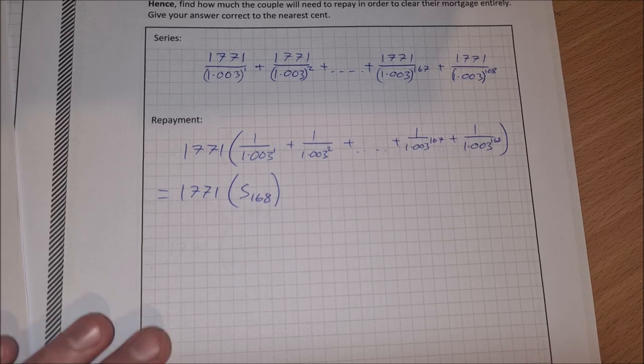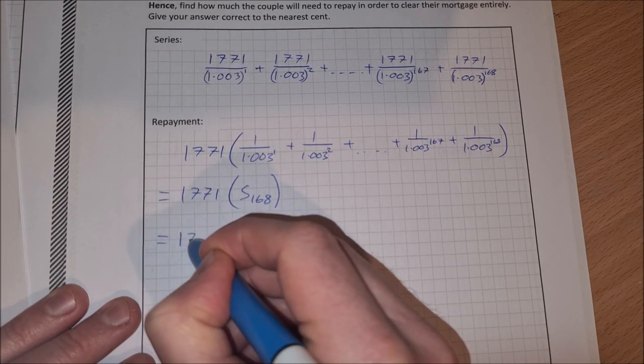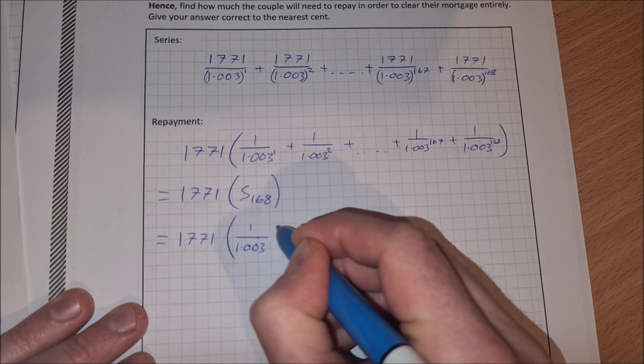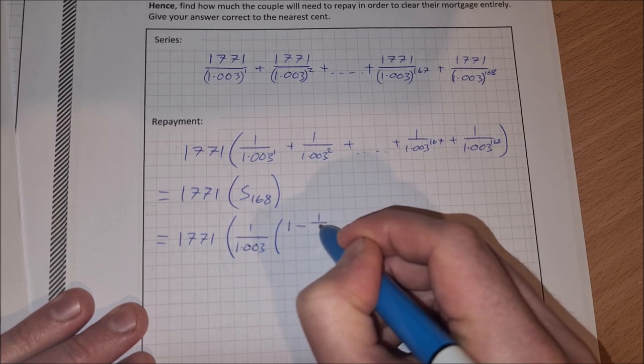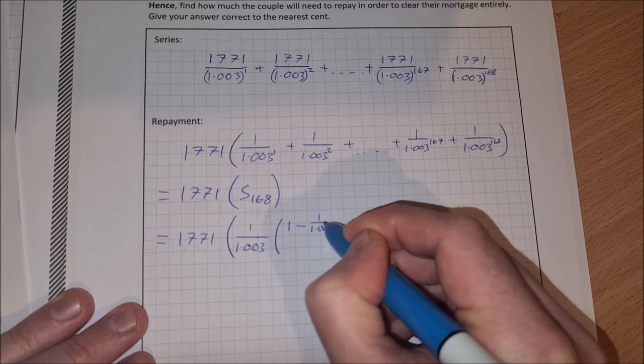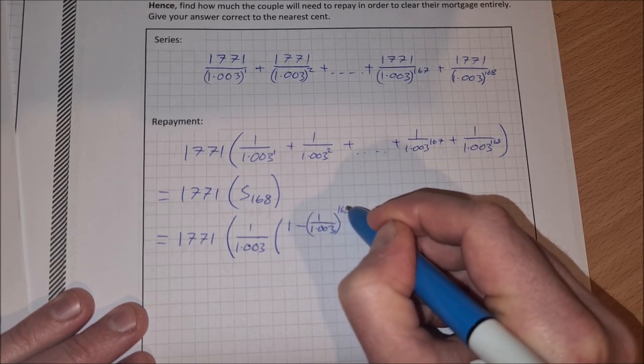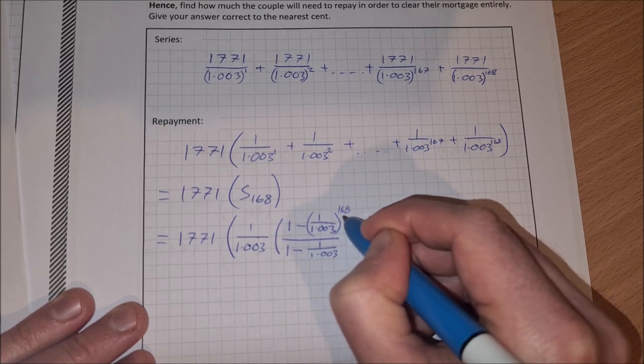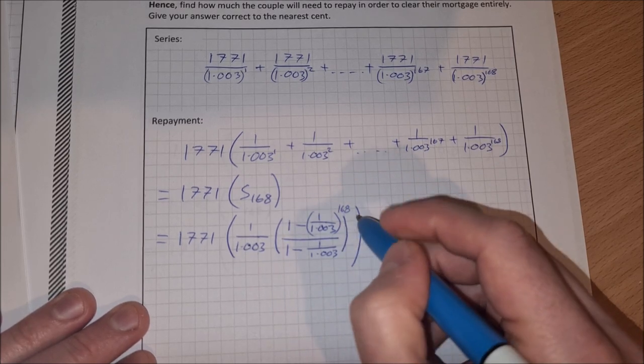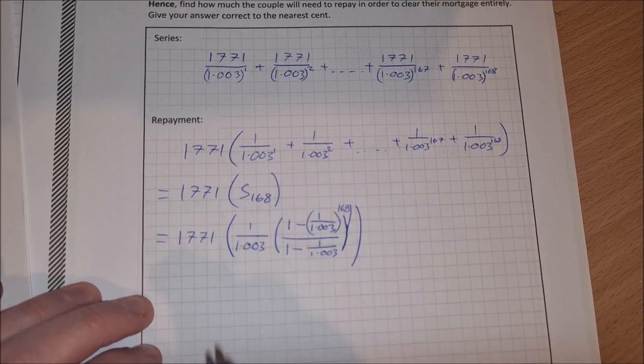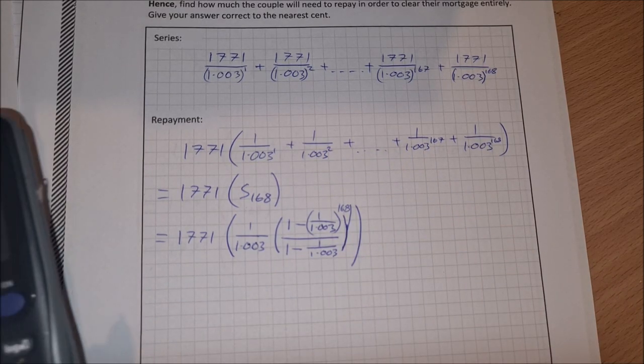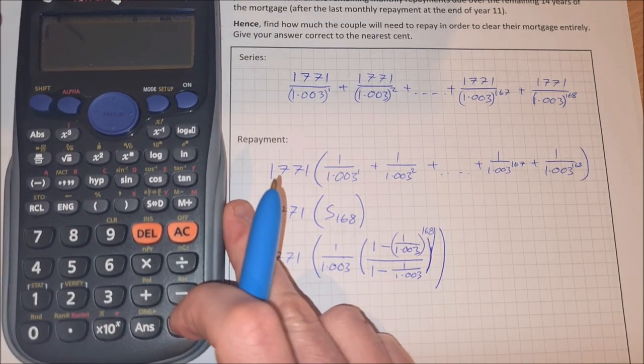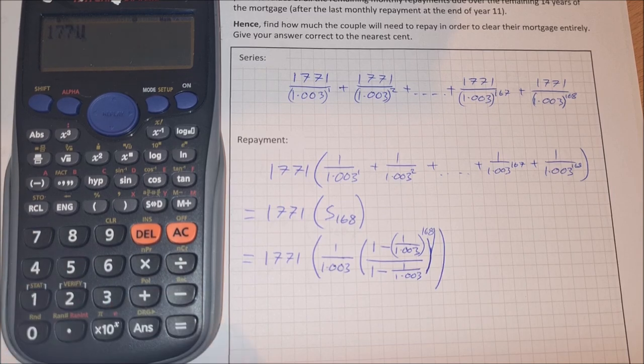So now my repayment amount is equal to 1771 times the S of 168, so the sum of my series which has 168 terms. So you can go to your log tables and find your S of N formula and it'll be 1771 times 1 over 1.003 times 1 minus 1 over 1.003 to the power of 168, and that's over 1 minus 1 over 1.003. And we can close that bracket there, and that 168 is inside this bracket here.